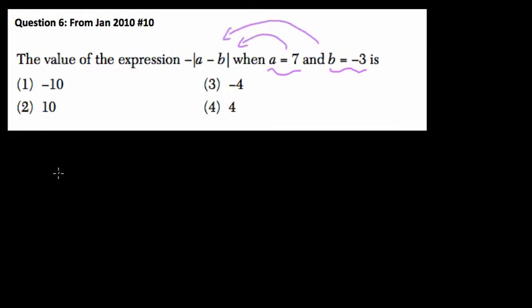So it says negative absolute value of A minus B. We know A equals 7, so I'm going to rewrite this as negative absolute value of 7 minus negative 3.